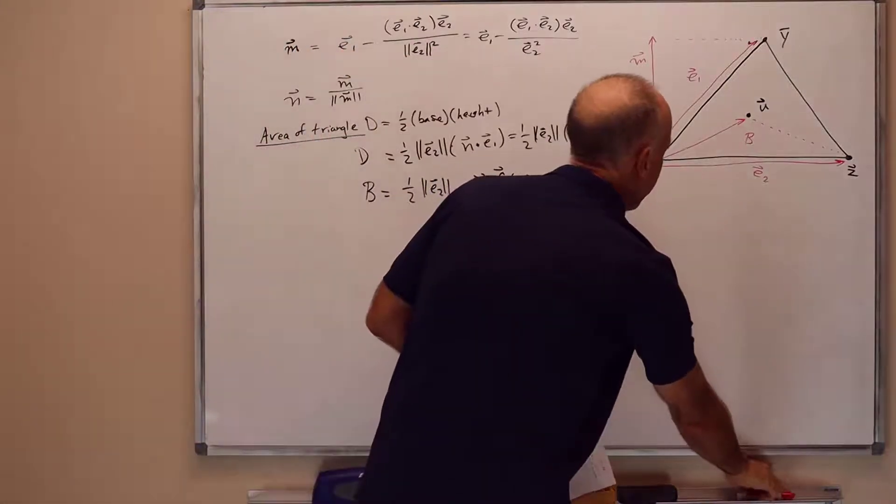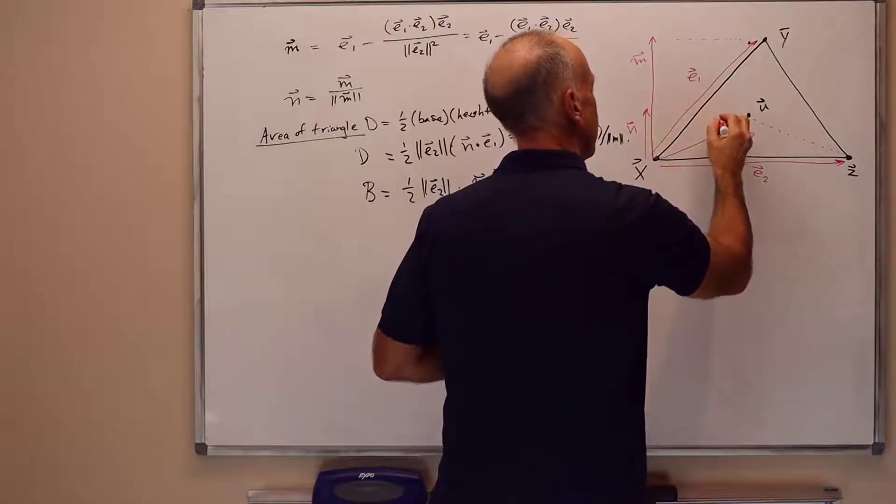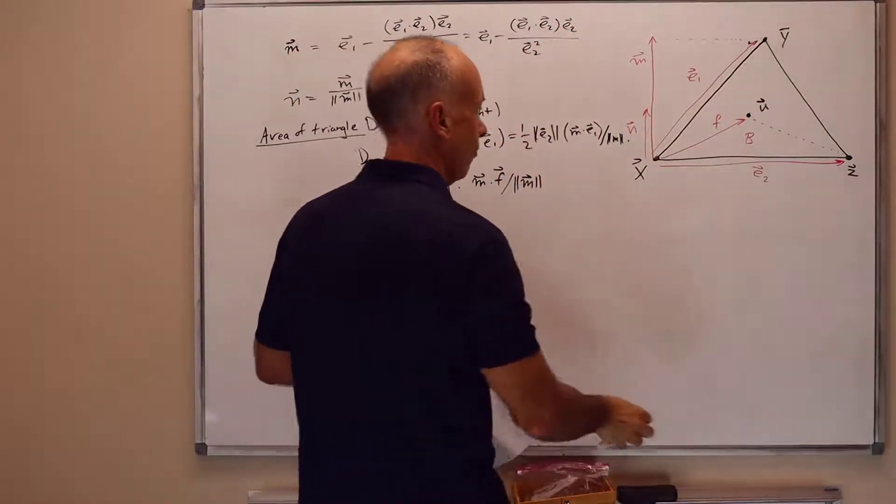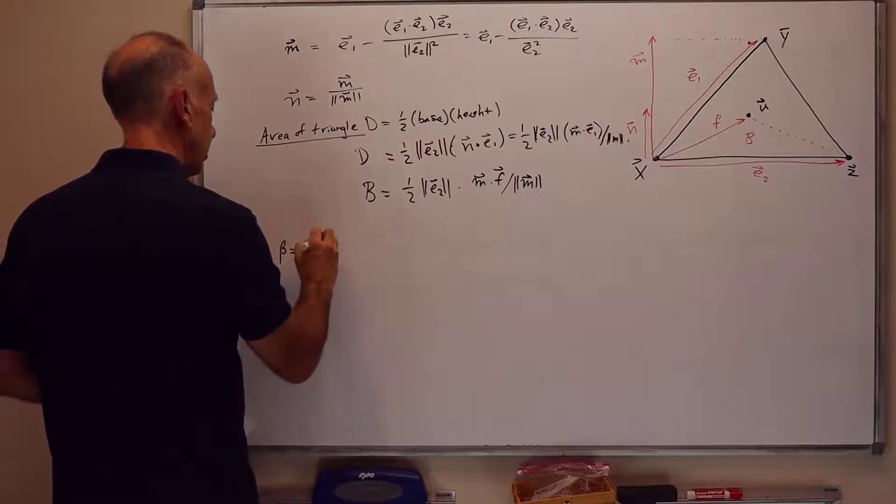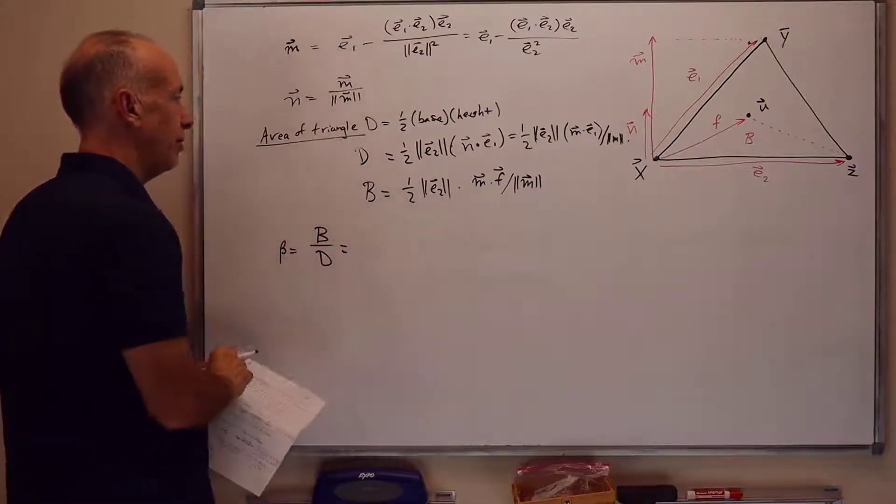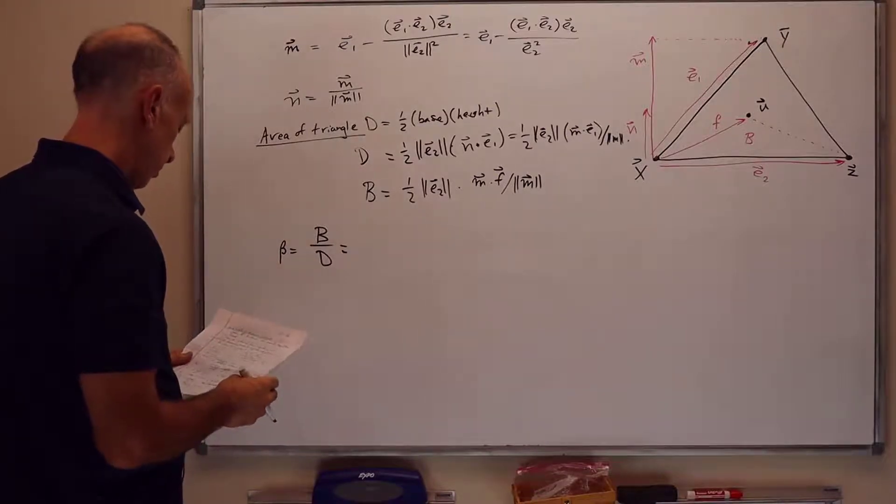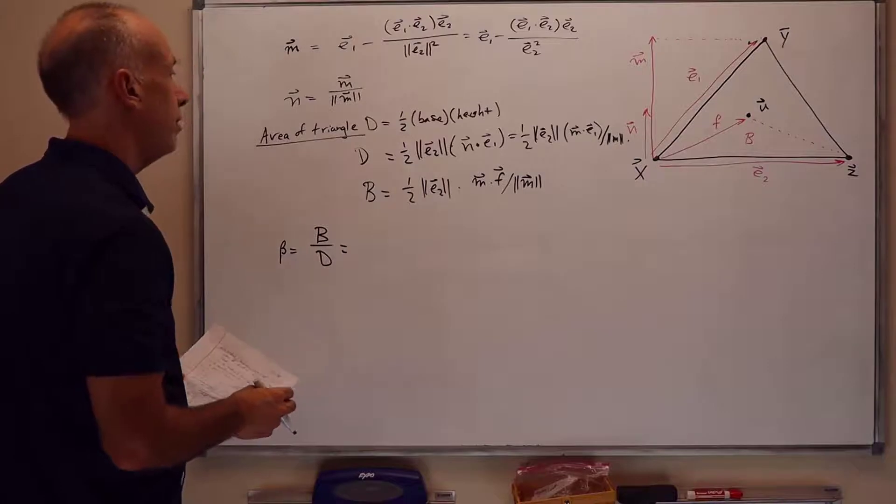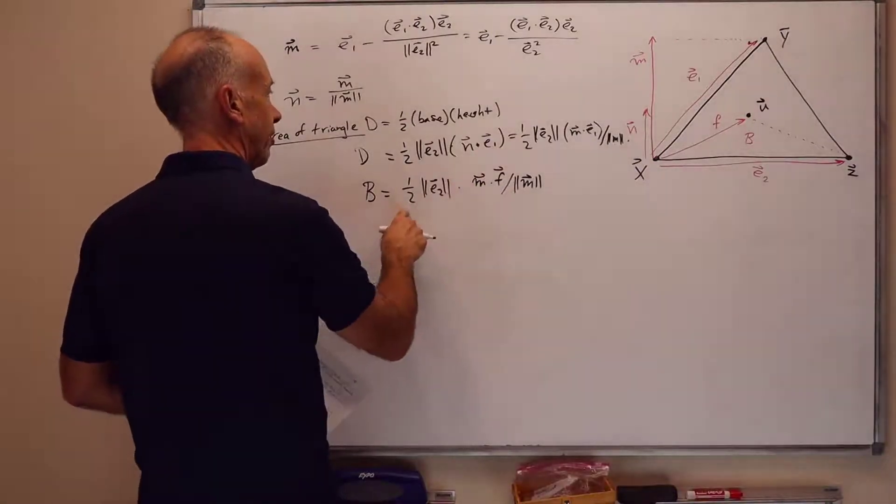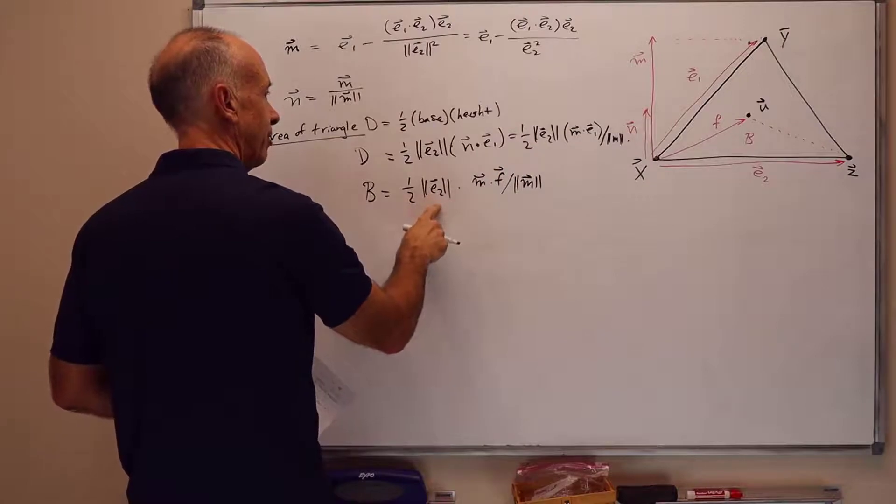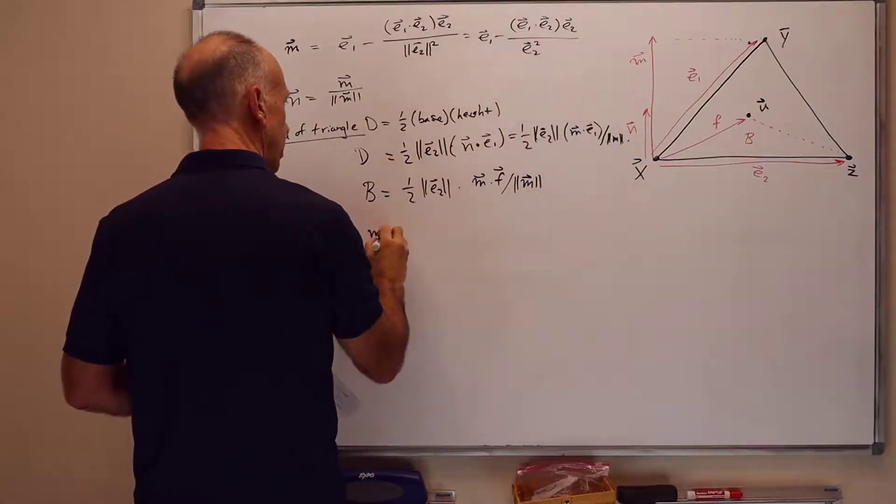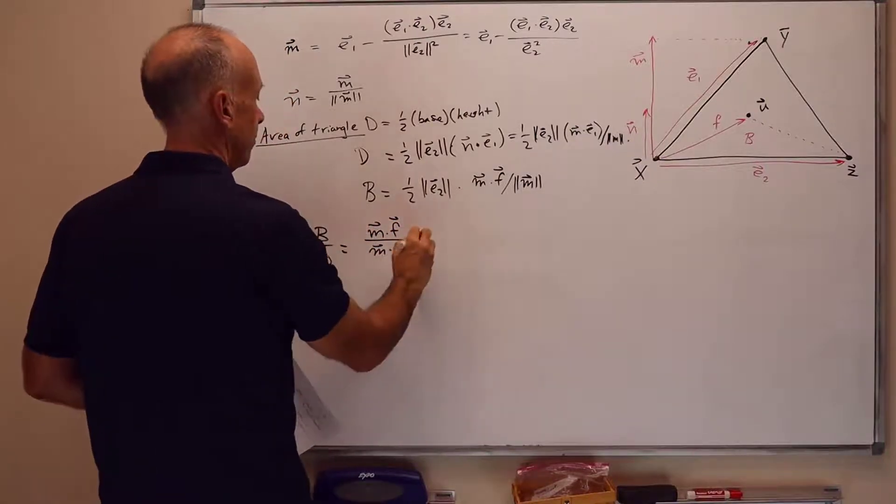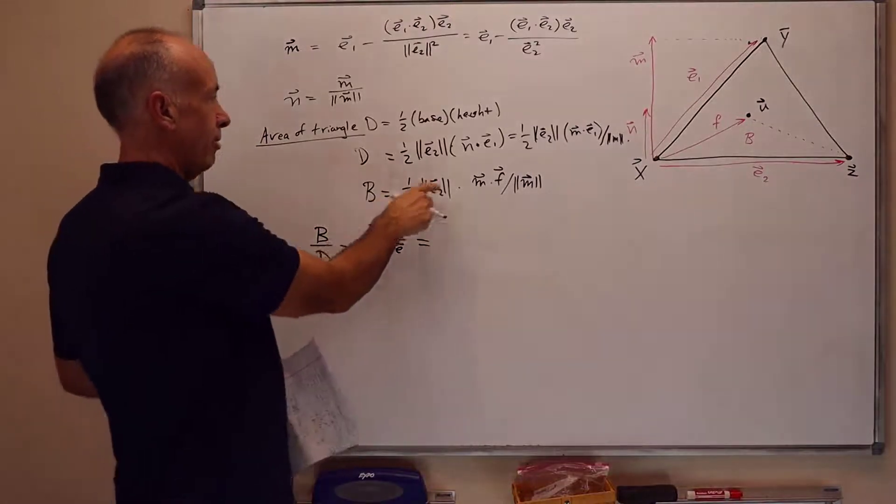And I see I left the f off the picture. There's the f. f was u minus x. So beta is then B over D. So when we take B over D, the one-halves cancel out, and the magnitudes of e2 cancel out, and the magnitude of the m's cancel out. So we're left with m dot f over m dot e1. We just canceled out the common terms in B and D.